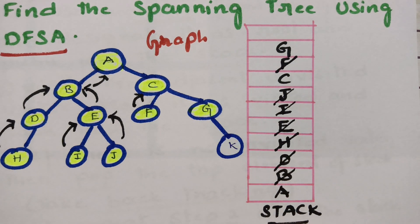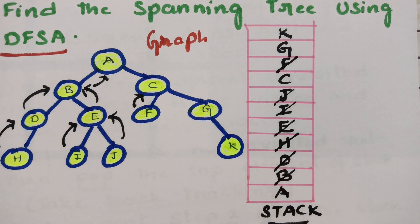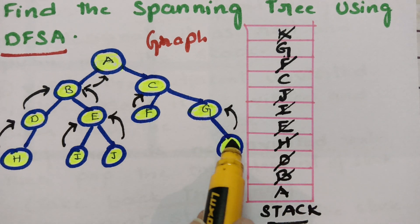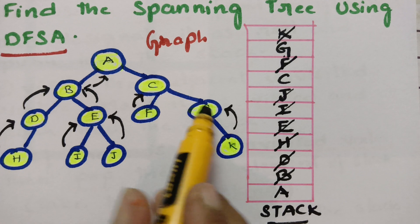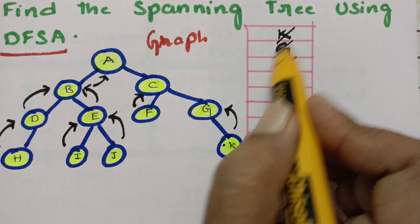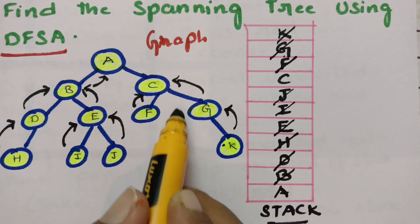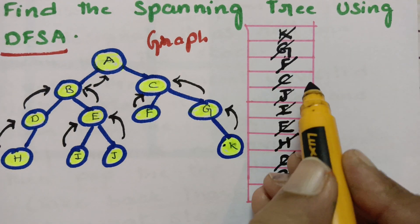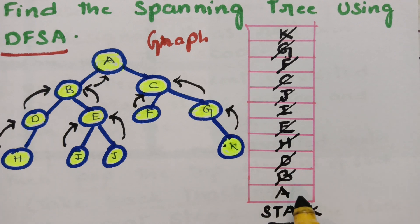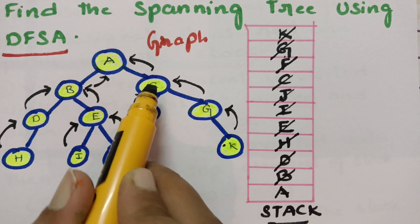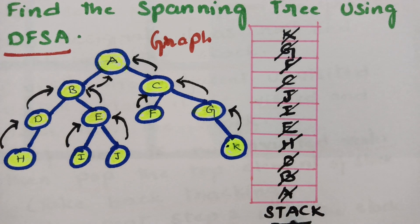From G there is one unvisited vertex K. I visit K, mark it as visited, and push it into the stack. From K there is no route to go deeper, so pop K and take backtracking to G. From G all adjacent vertices are visited, so pop G and take backtracking to C. From C all adjacent vertices — A, F, and G — are visited, so pop C. Then go to A; A's two adjacent vertices are both visited, so pop A. The stack is now empty.